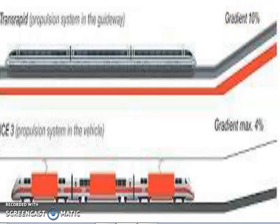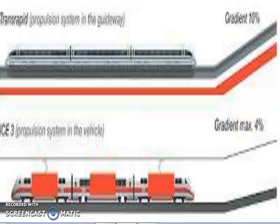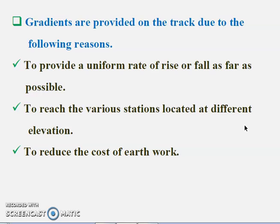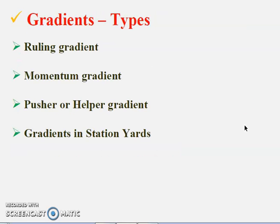Here the gradient value is given as 10% — this is also a raising gradient. The maximum gradient is around only 4%. These are examples of raising gradients. Coming to the types of gradients, there are 4 major types: ruling gradient, momentum gradient, pusher or helper gradient, and gradients in station yards.